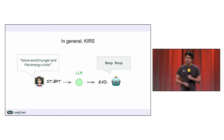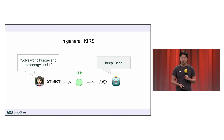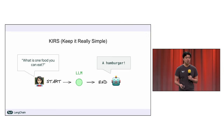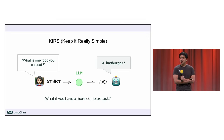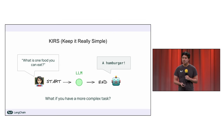Another general tip: if you have a small LLM and ask it a wide-scope query, you're probably going to be a little disappointed. If you ask a small LLM to solve world hunger and the energy crisis, you'll get a worse response than from something like OpenAI's newest reasoning model. KIRS — keep it really simple. If you ask something simple, you're going to be a lot better off and a lot happier in general. What's one food you can eat? A hamburger. But what if you do need something more complex? LLMs are prone to distraction, especially as your instructions become more elaborate.